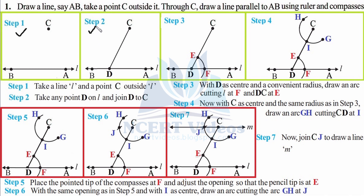Step three: with D as center and a convenient radius, open your compasses — the radius must be shorter than distance DA. Put the sharp needle on D and open it up to F, then draw an arc. This arc cuts line l at F and line DC at E. So you have drawn an arc marking points E and F.